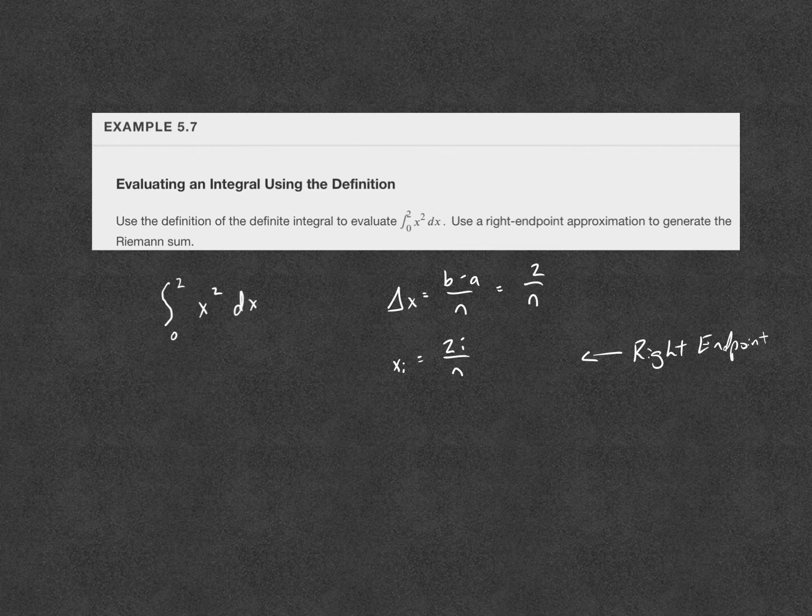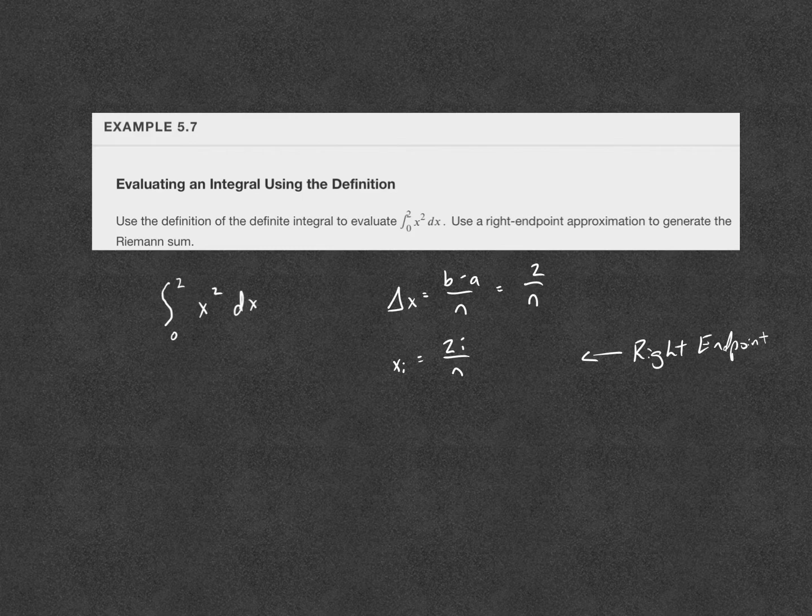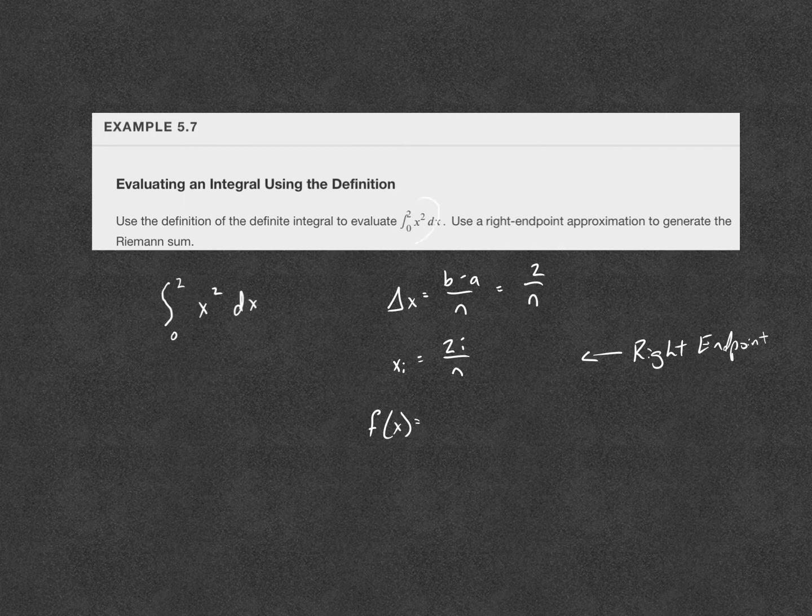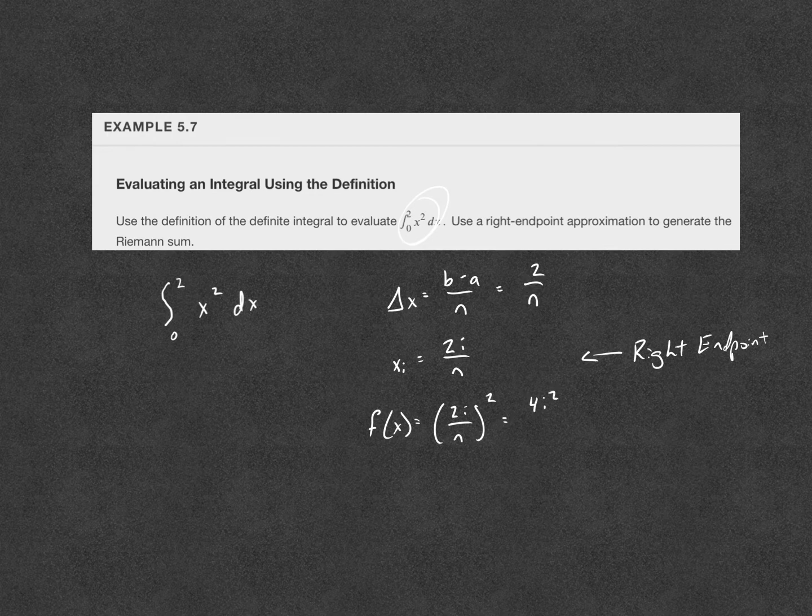This is for the right endpoint. And this is x subscript i, so the i-th endpoint is 2i over n. The first rectangle would have an endpoint at 2 times 1 over n, the second rectangle at 2 times 2 over n, the 57th rectangle would have an endpoint at 2 times 57 over n. Now we're going to evaluate that endpoint. f of x is equal to - now our function is x squared - so it would be that 2i over n quantity squared, and that gives us 4i squared over n squared.